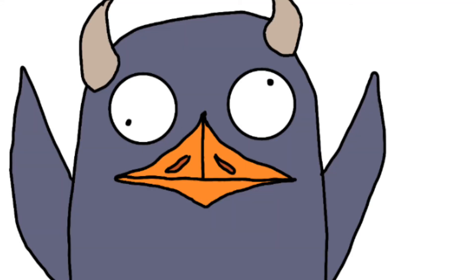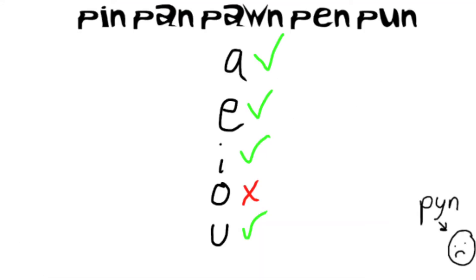Next one, we have the words pin, pan, pon, pen, and pon. Pon is spelled with an A-W and not an O. Why don't we just complete the vowel set?